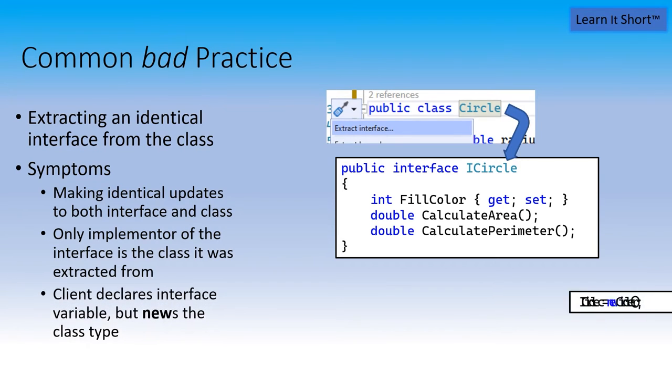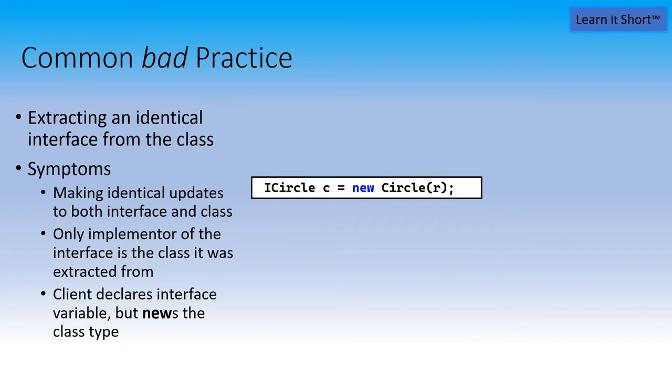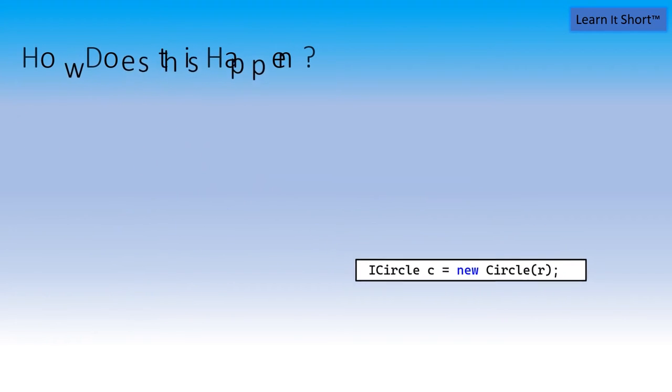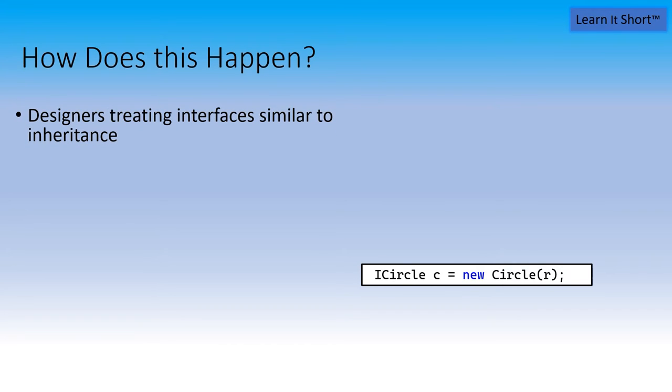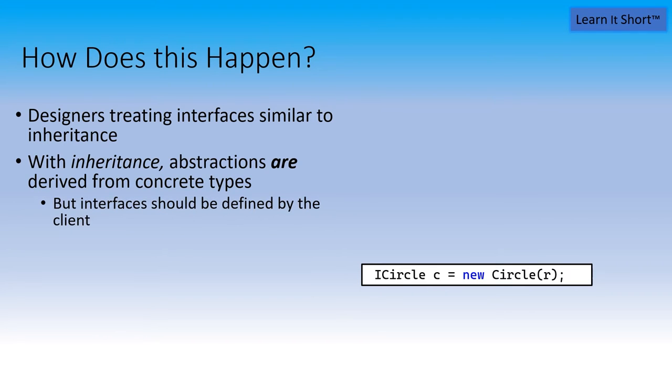And that leads us to the last thing, where the client declares the variable of the interface type, but it news the class type. Why does this happen? Well, I think designers are thinking about interfaces as an alternative to inheritance, and they're motivated to create interfaces for the same reasons that they're motivated to define inheritance. Inheritance is a similar solution, a similar tool, but it's got a different motivation. With inheritance, abstractions are derived from the concrete types. We're defining interfaces from the callers point of view. The circle class shouldn't have anything to do with defining an interface that might be used by a client.